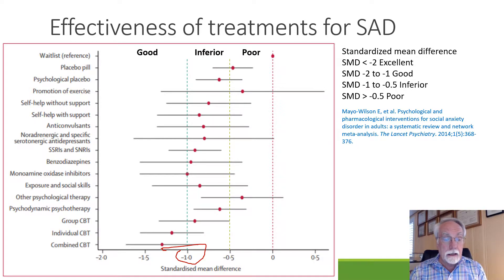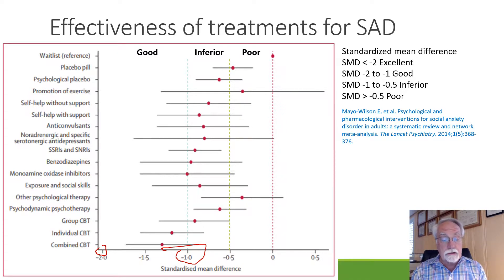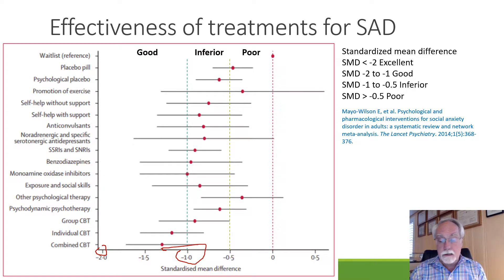Out further would be excellent, but nothing really reached that. You can see that combined and individual cognitive behavioral therapy did the best. Interestingly, the MAO inhibitors did quite well also. Anticonvulsants were not so good.